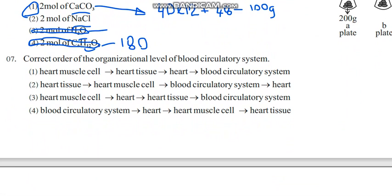Correct order of the organizational level of blood circulatory system. This is the organizational level of a multicellular organism. First it always starts with the cell, so second one with tissue we can reject, fourth one with system we can also reject. Heart muscle cell, next should be tissue, then tissues together form the organ heart, then the blood circulatory system. First one is the answer. Eliminating the answers would help you to gain the correct answer in MCQs.